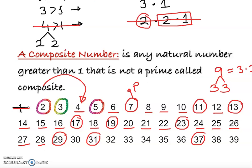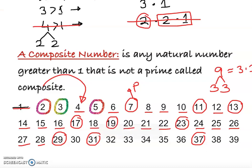So to summarize: if you can break a number down, it's a composite number. If you cannot break it down and it is greater than one, it's a prime number. Having a strong base in math means knowing what prime and composite numbers are. Thank you for watching.